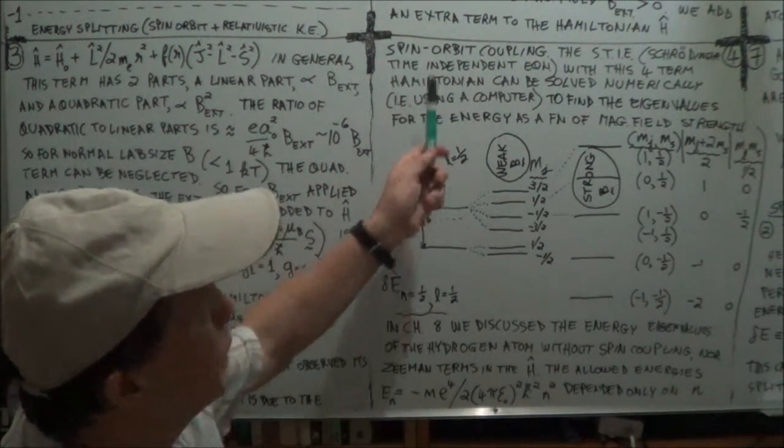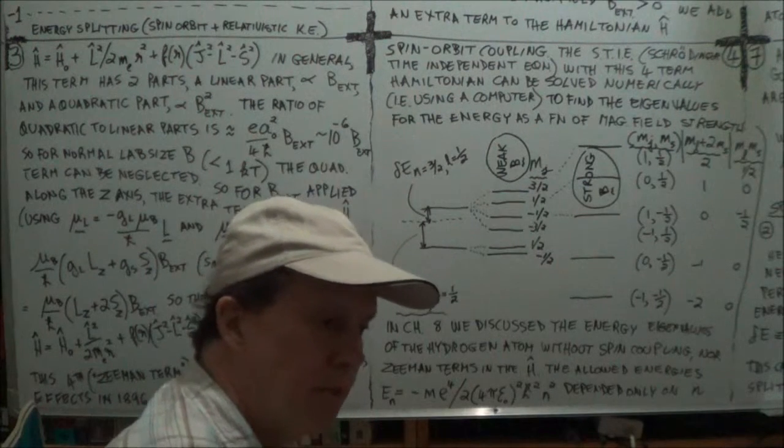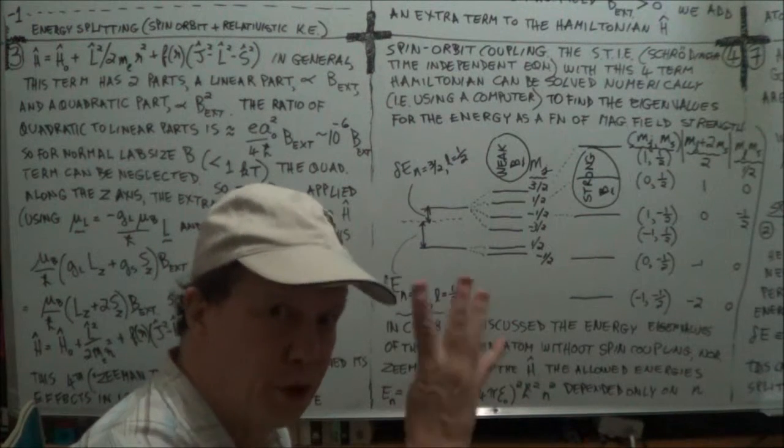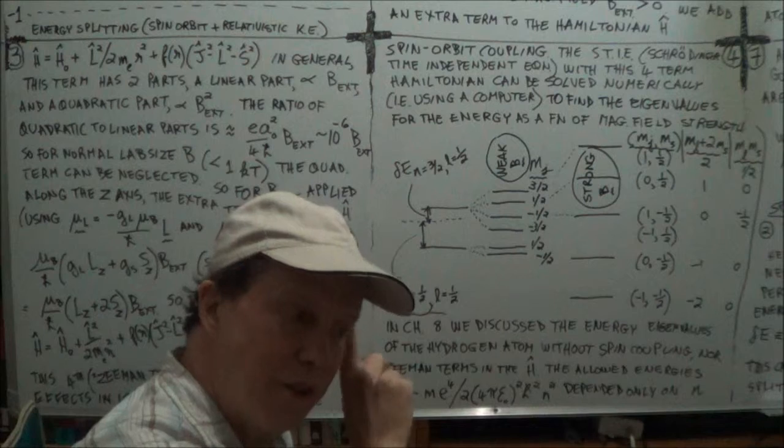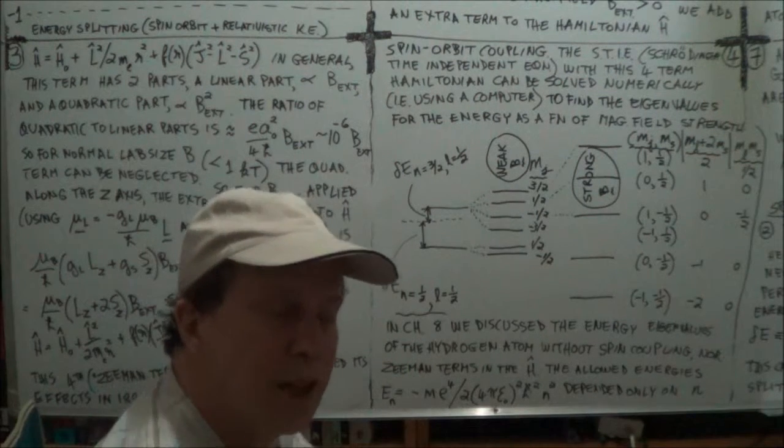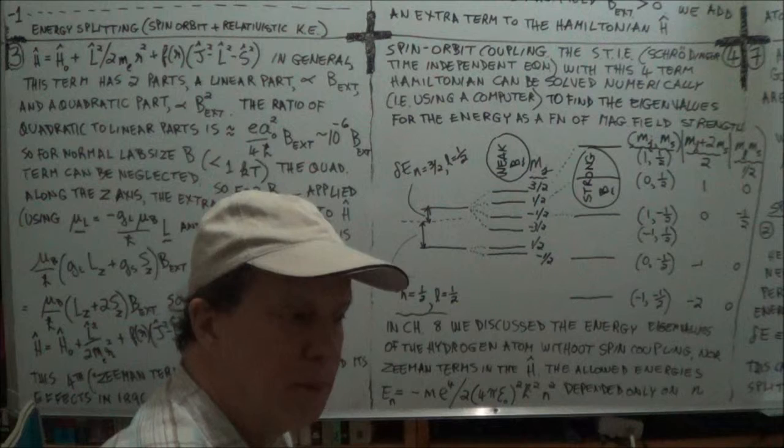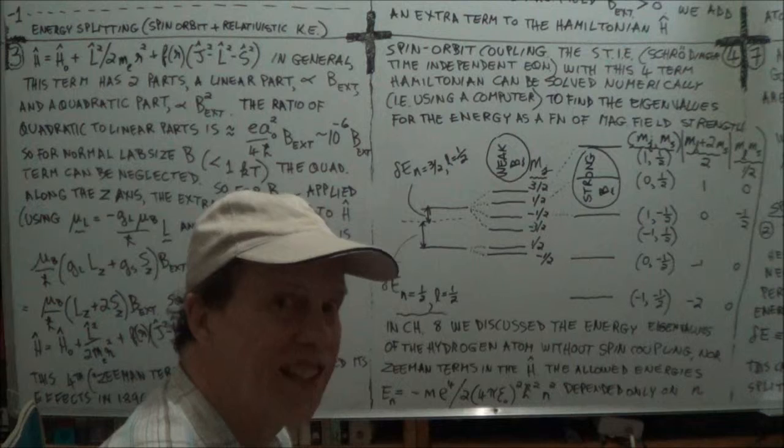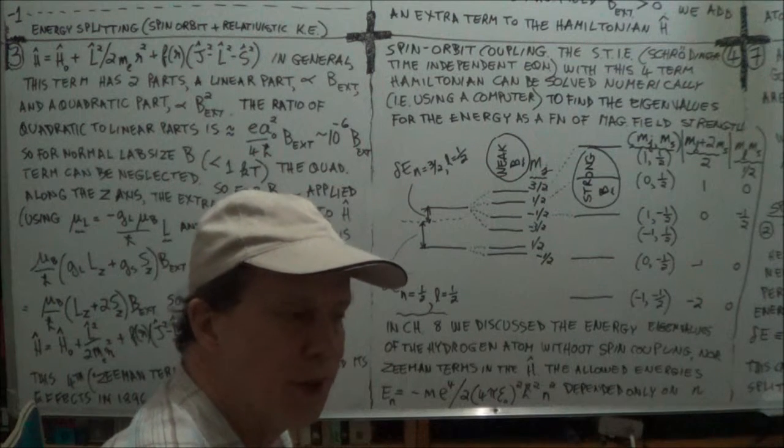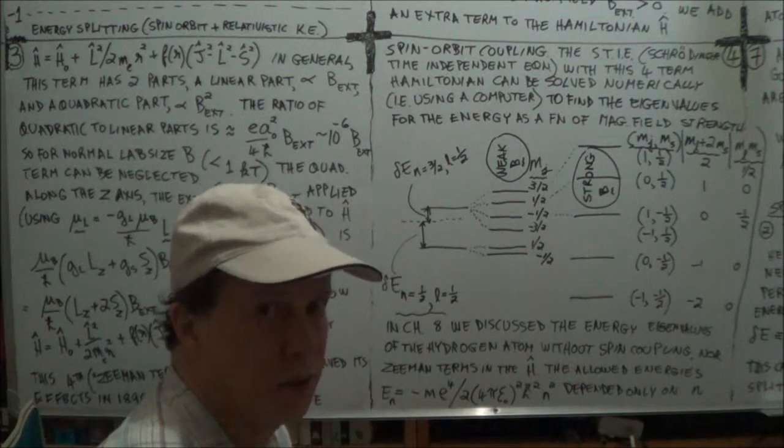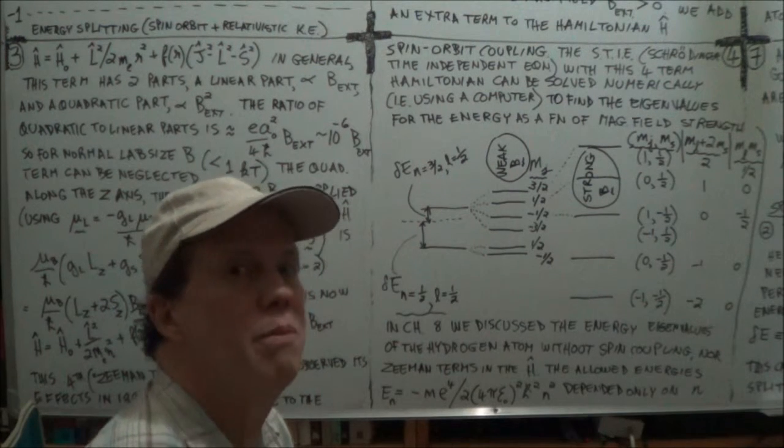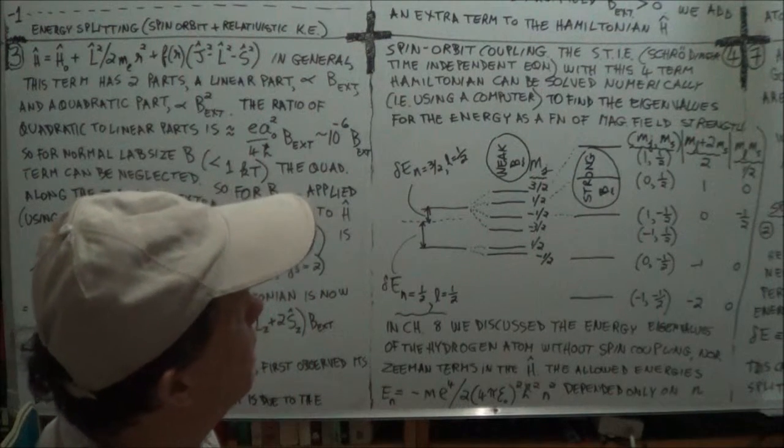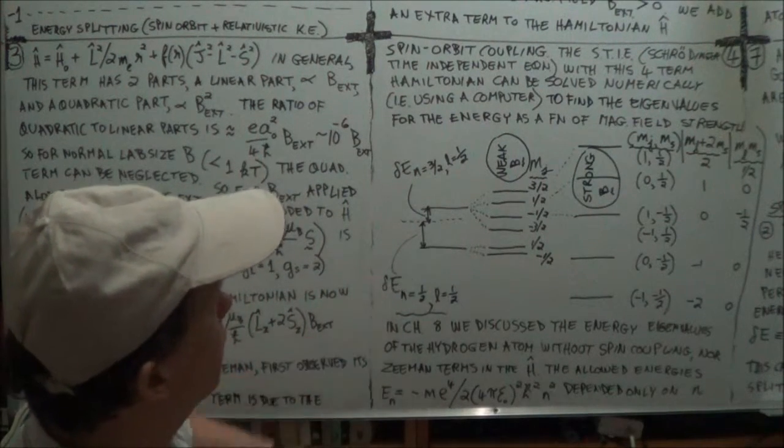So how do you solve it? You of course, as usual, you plug in the Hamiltonian with your fourth term, this extra term now, into the eigenequation, the energy eigenequation. And solving it is very difficult to do analytically with closed expressions and so forth. So in practice you just use a computer. You use numerical methods to solve it, to find the eigenvalues. And what you get is something like the following.